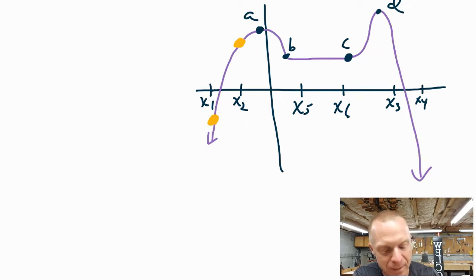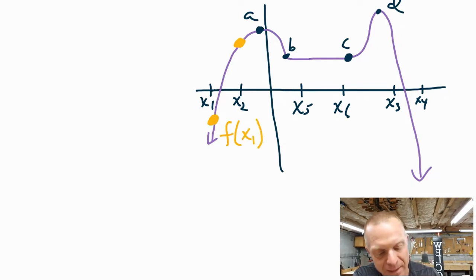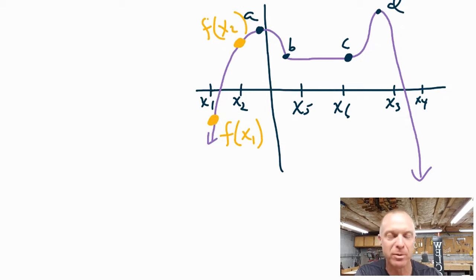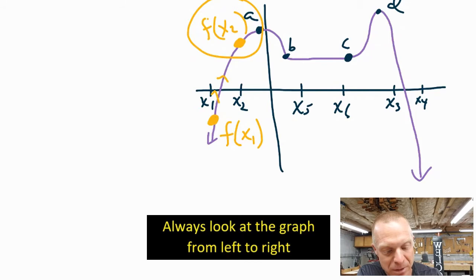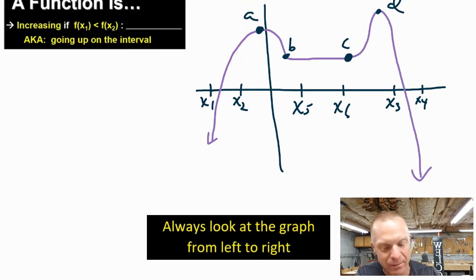x sub 1 would have a y value that we could call f of x sub 1. This other point we could say is x sub 2, and it has a y value of f of x sub 2. Whenever I use this function notation, remember that always refers to the y value. The second y value is actually greater than the first, and when this happens we would say that the function is increasing — it is going up in that interval.